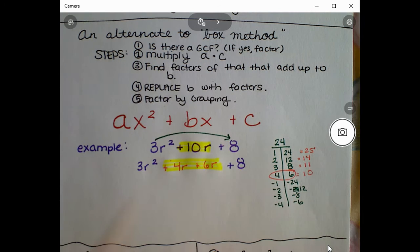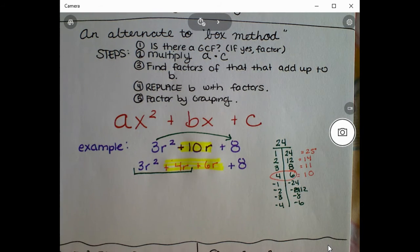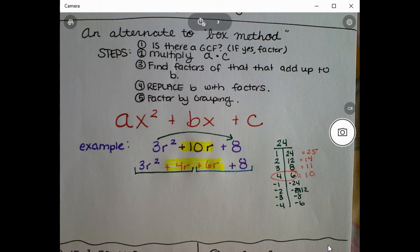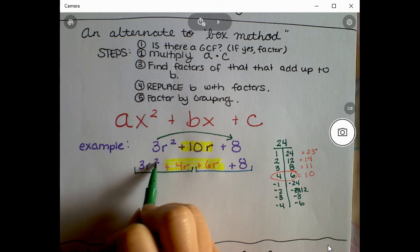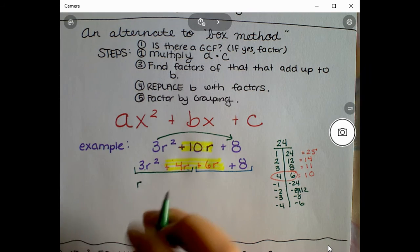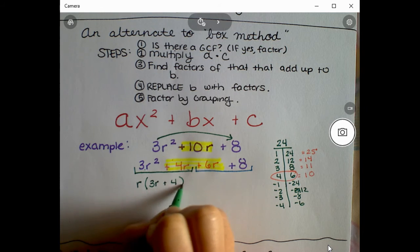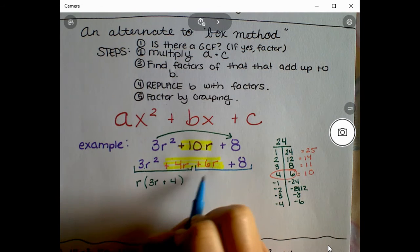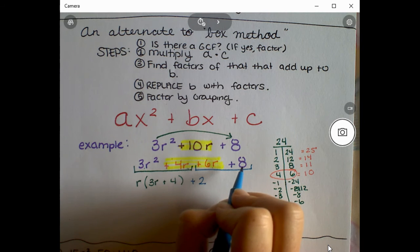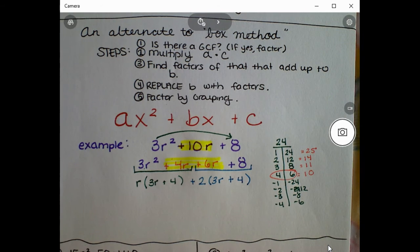Now we're going to factor by grouping. We make two groups — the first two terms and the last two terms — and look at them individually. For the first group, 3r² and 4r, the GCF is r: r times 3r is 3r², r times 4 is 4r. For the second group, 6r + 8, the GCF is 2: 2 times 3r is 6r, 2 times 4 is 8.